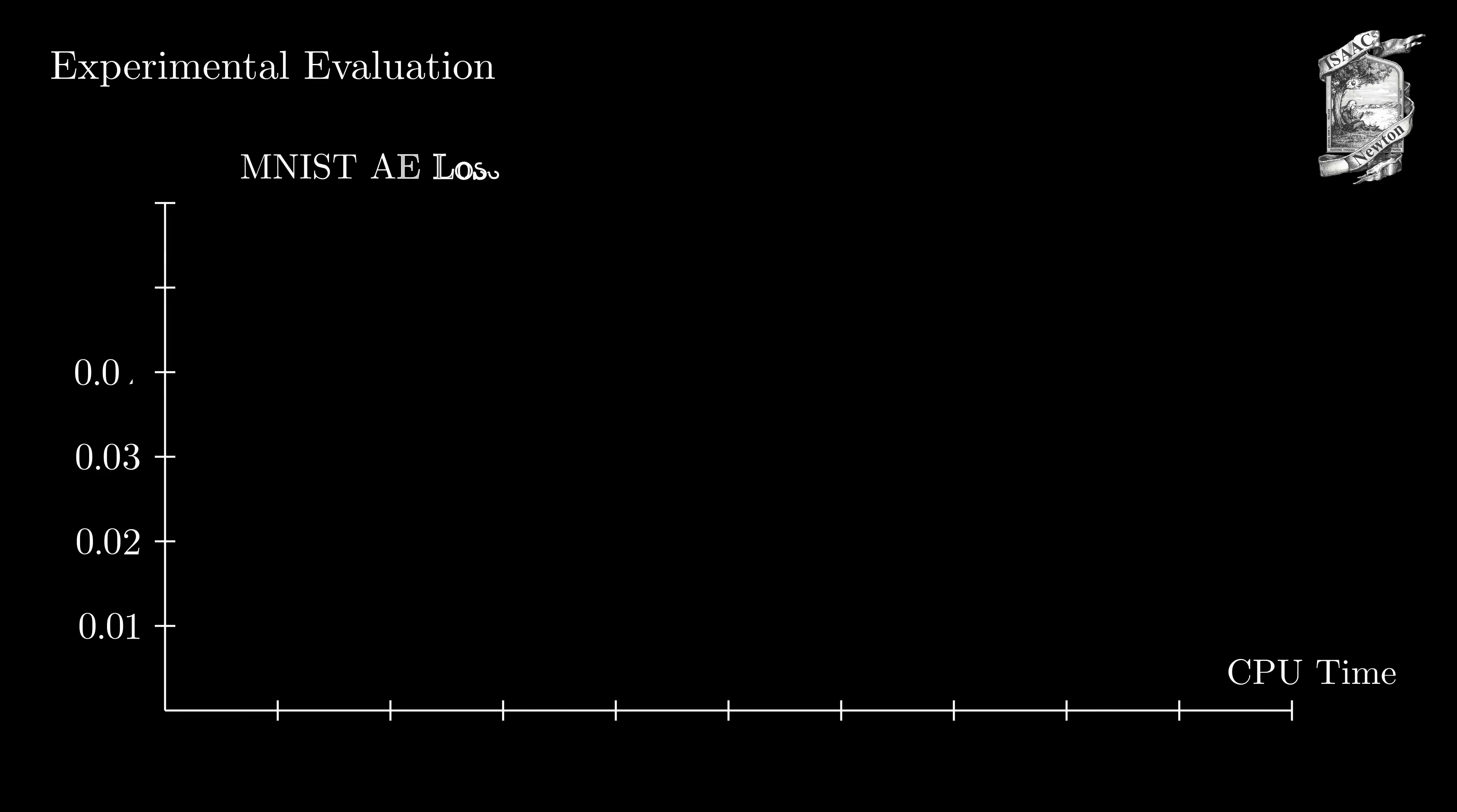After discussing the theory and method, let's go into the experimental evaluation. First, we consider training of an MNIST autoencoder with the loss plotted against the training time. We can see that ISAAC only requires a little more time than gradient descent while reaching a substantially lower loss at every time during training.